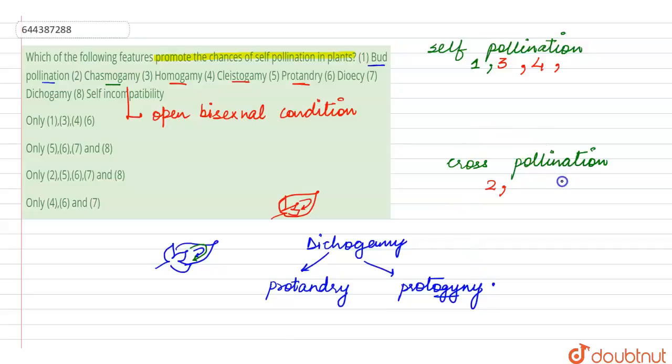So in that case cross-pollination will be favored. So here number five and number seven, that is dichogamy, both are associated with the cross-pollination. Whereas dioecious, that means the bisexual condition, if a flower has both anthers and the stigma, it is going to favor the self-pollinating condition.